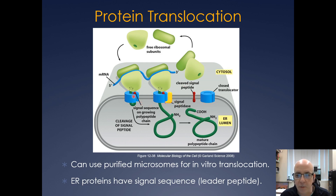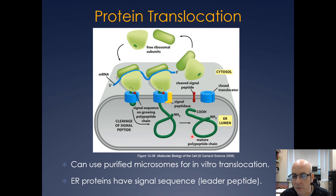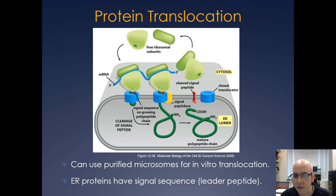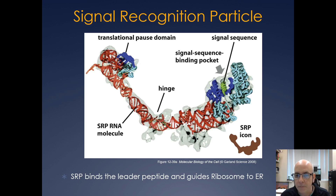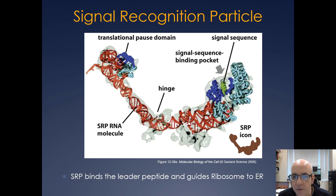It's the leader sequence and signal peptidase that cleaves it that makes the mature protein soluble, because the signal sequence is often a stretch of hydrophobic amino acids. For co-translational translocation to occur, you need a protein called signal recognition particle, or SRP.